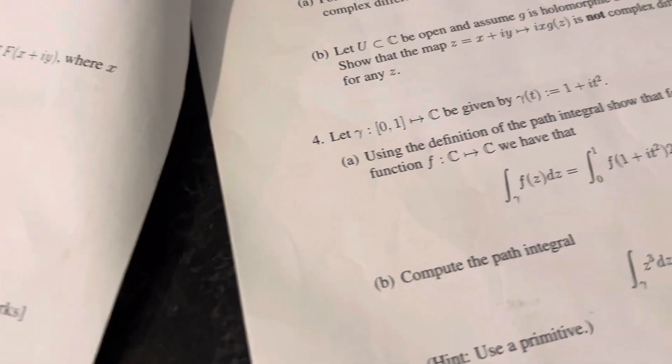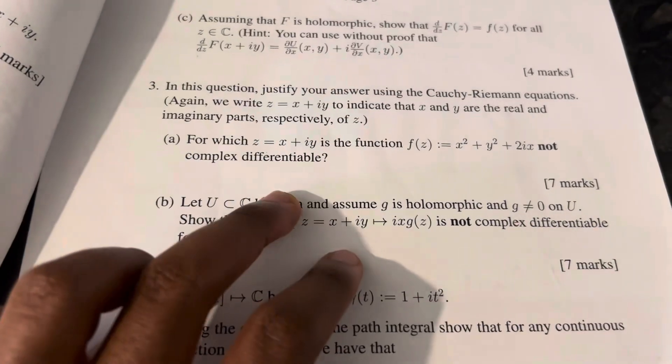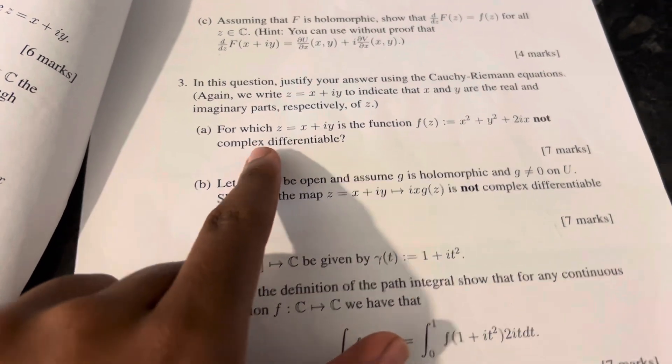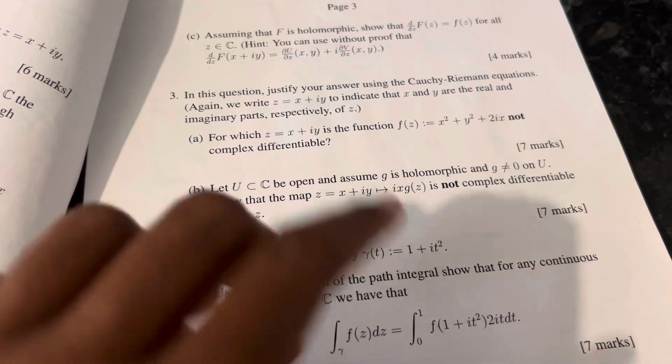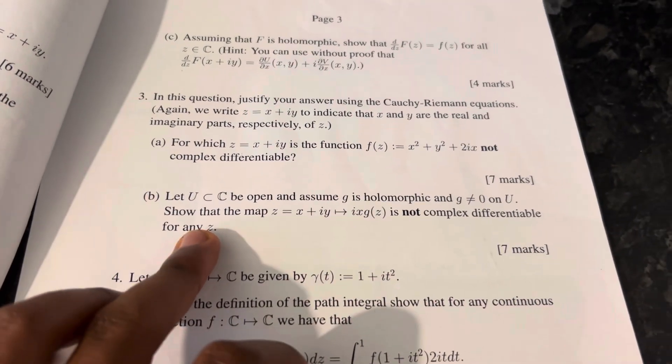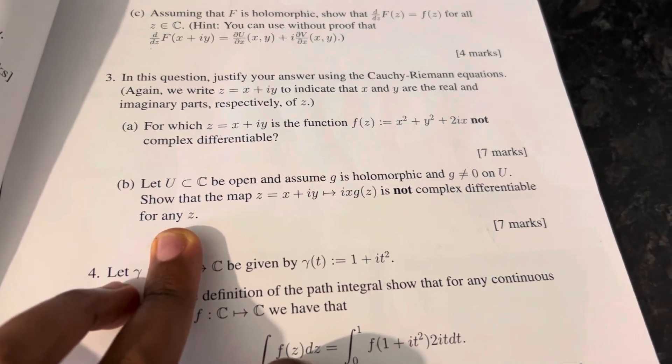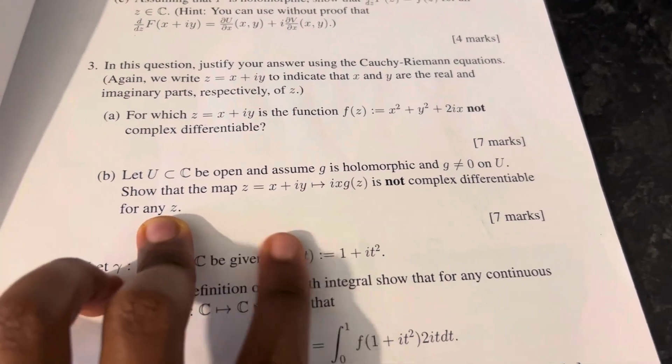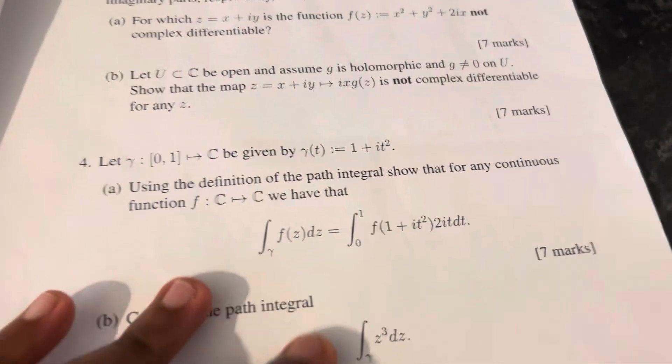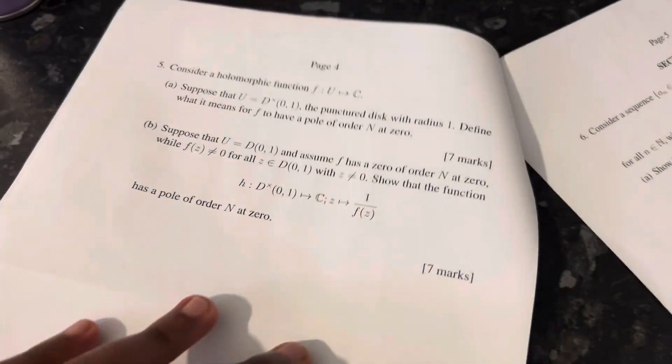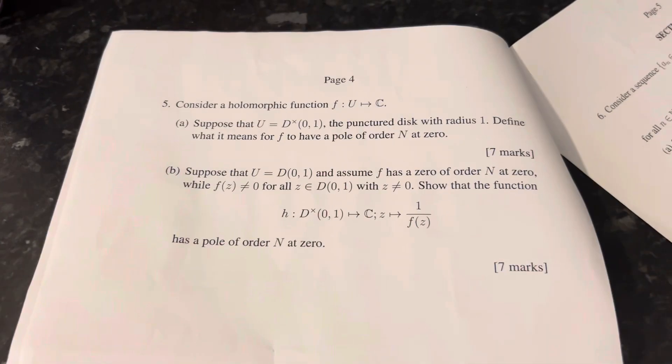This question is the prime example of that. There's this one: use Cauchy-Riemann equations to justify your answer for the function not complex differentiable. Let u in C be open and assume holomorphic and g is not equal to zero. Show that this map is not complex differentiable. Then just about path integral stuff, then this is about poles.